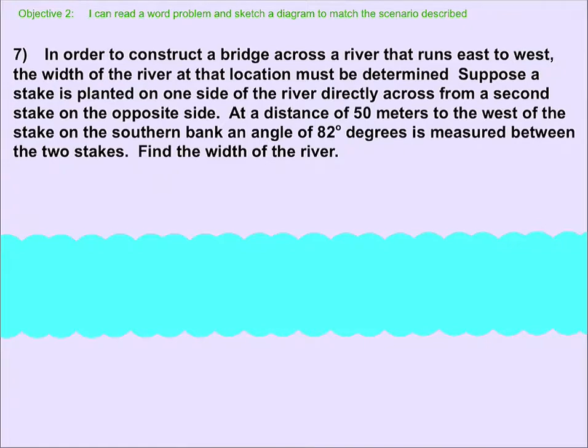In order to construct a bridge across a river that runs east to west, so that's referring to the river, not the bridge, so the bridge is going to have to go from here to here. The width of the river at that location must be determined. We'll call that W for the width, because that's what they described it as.